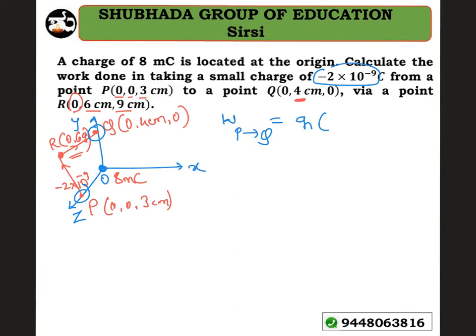The work done W equals charge q into the potential difference, that is potential at Q minus potential at P.